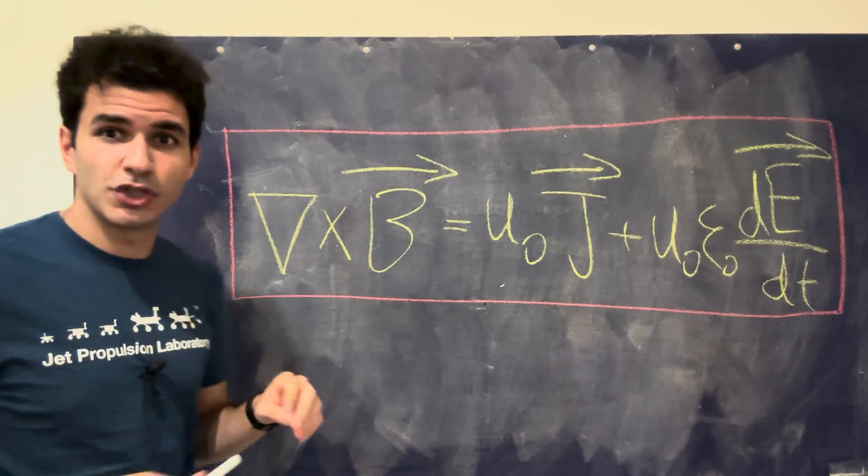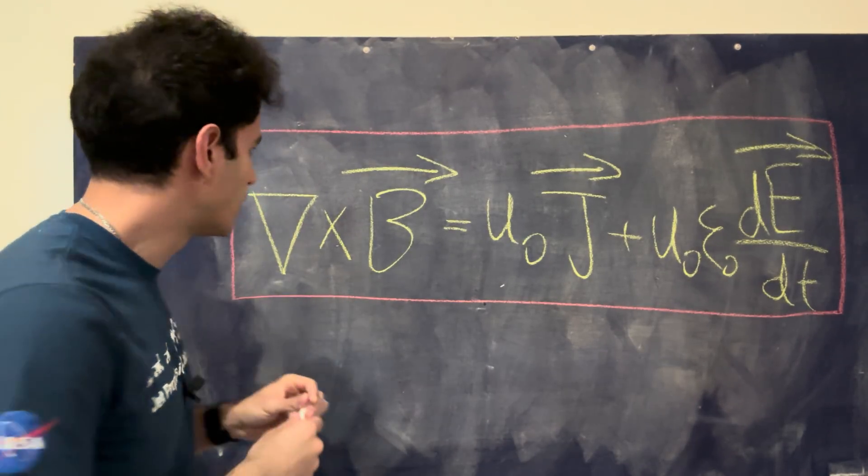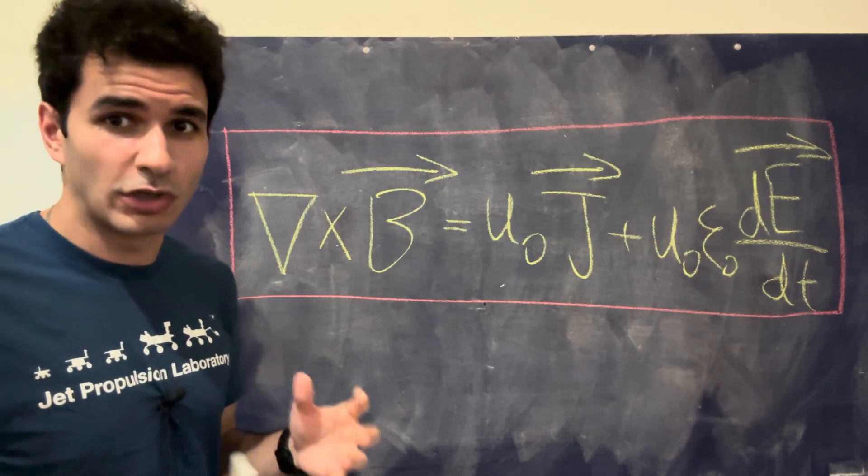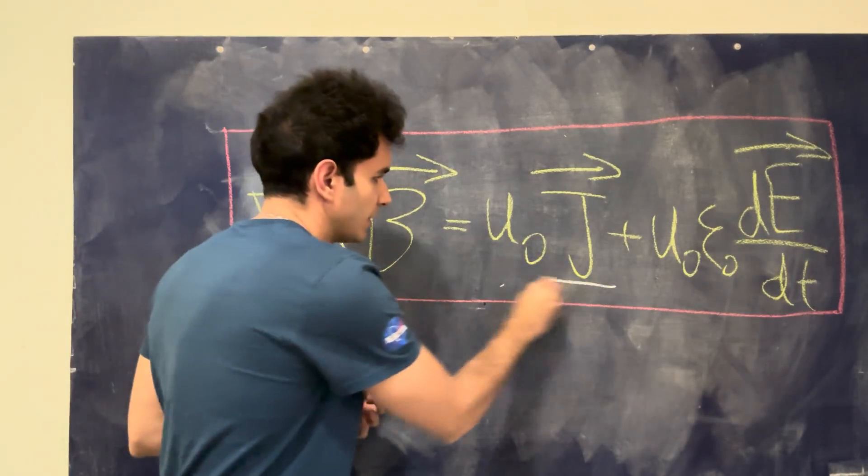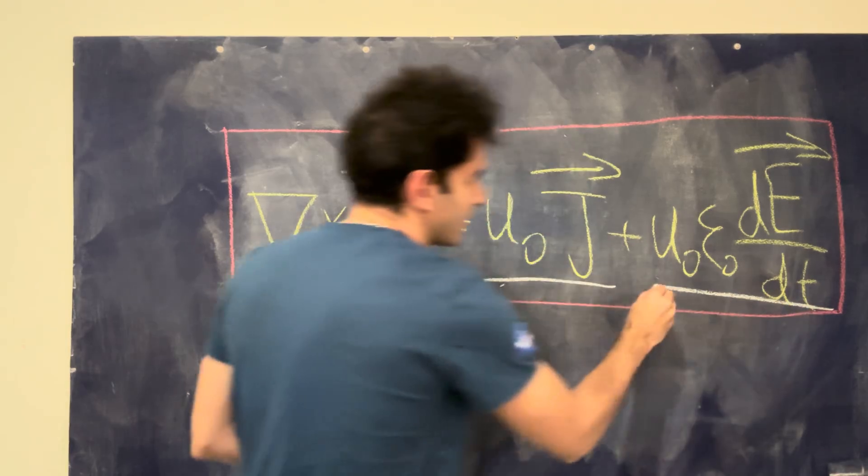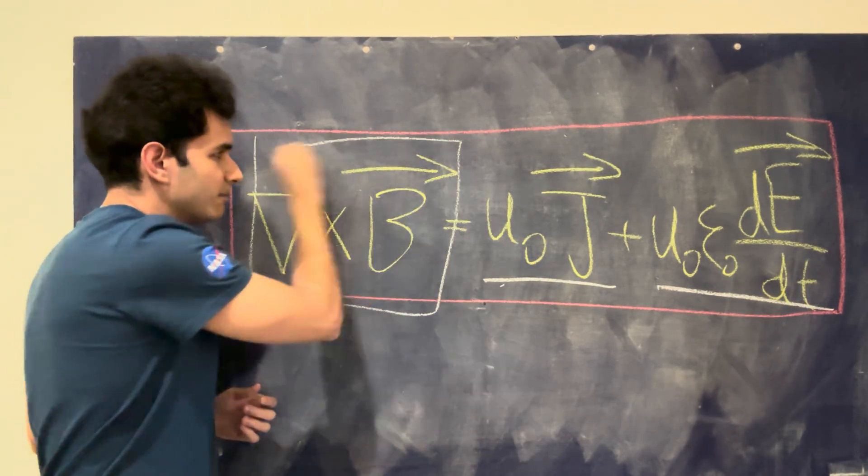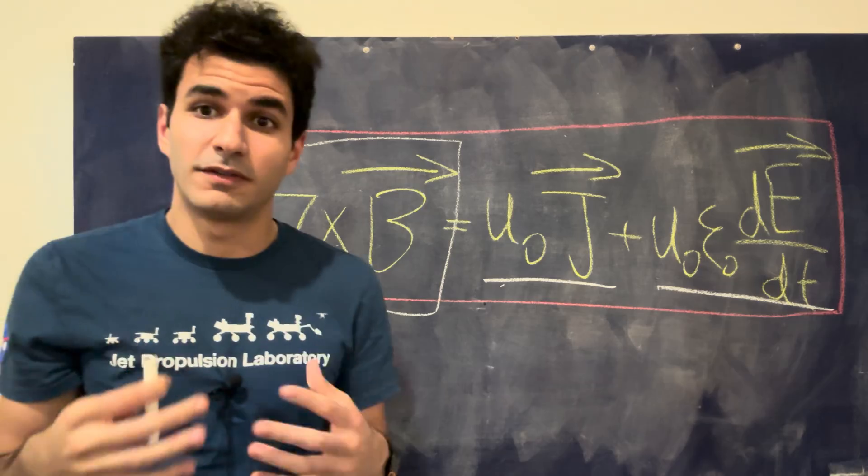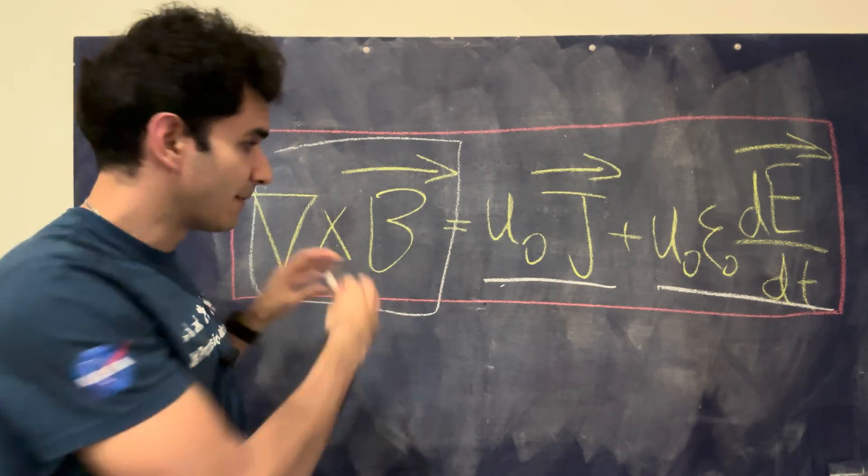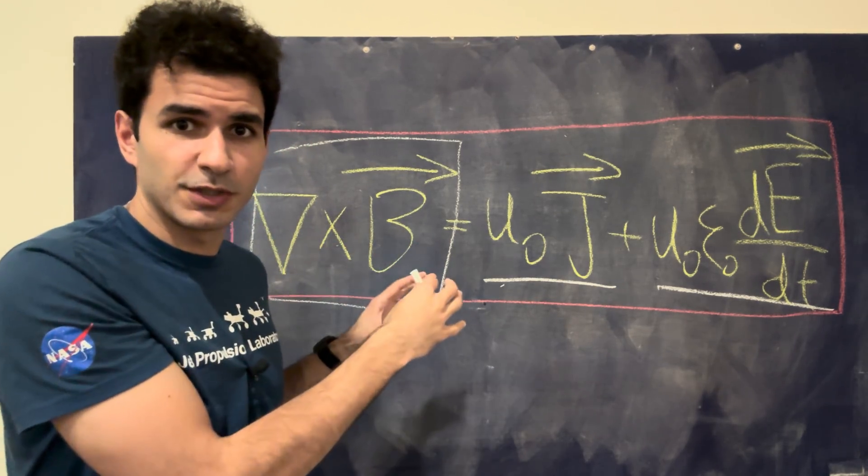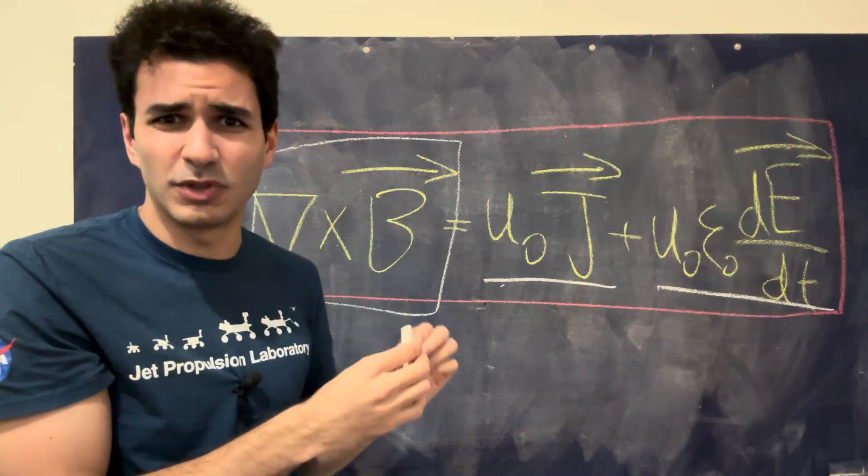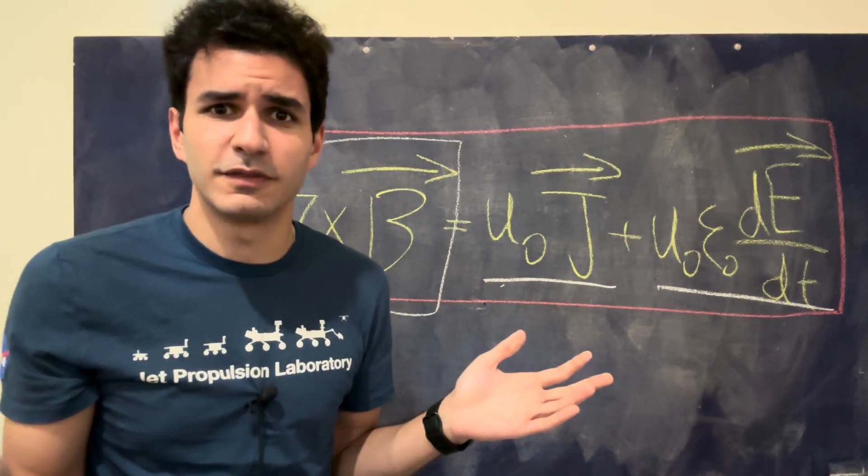And this equation is equation number four in Maxwell's equations. It's called the Ampere-Maxwell law because it has two components: the Ampere component and the Maxwell component, and both of them create some type of effect that is going to become very relevant. So what I'm going to do in this video is break down this equation from first principles, make it extremely simple, even if you have absolutely no background in physics or math.